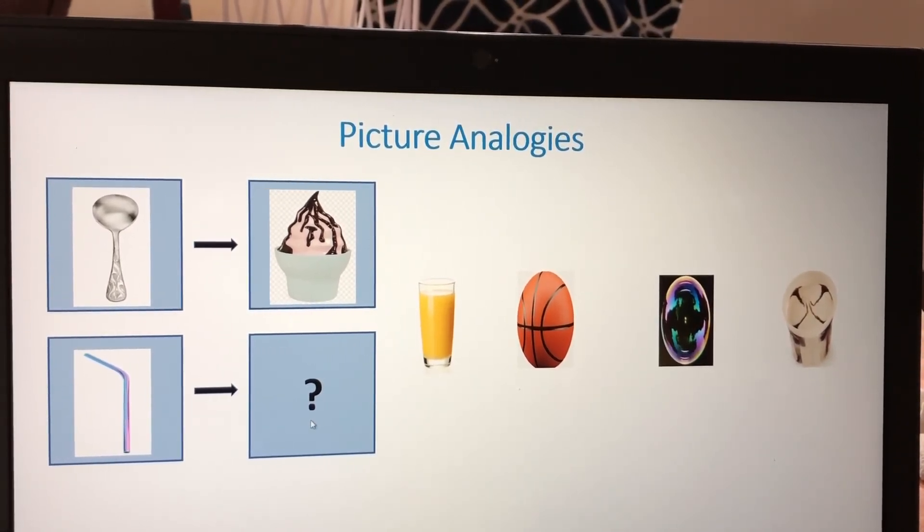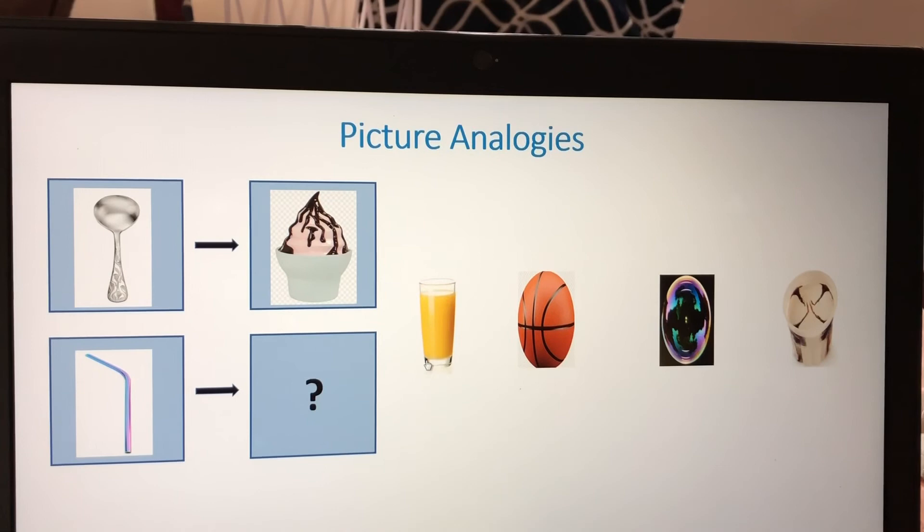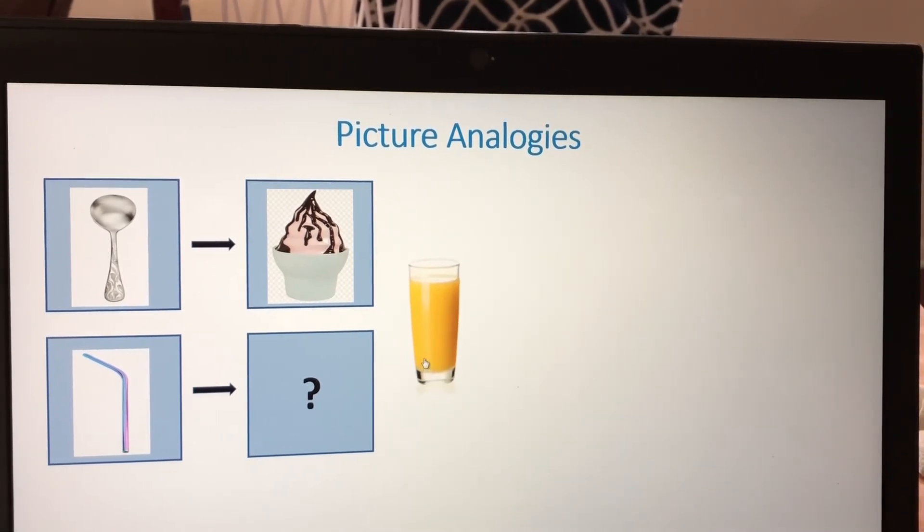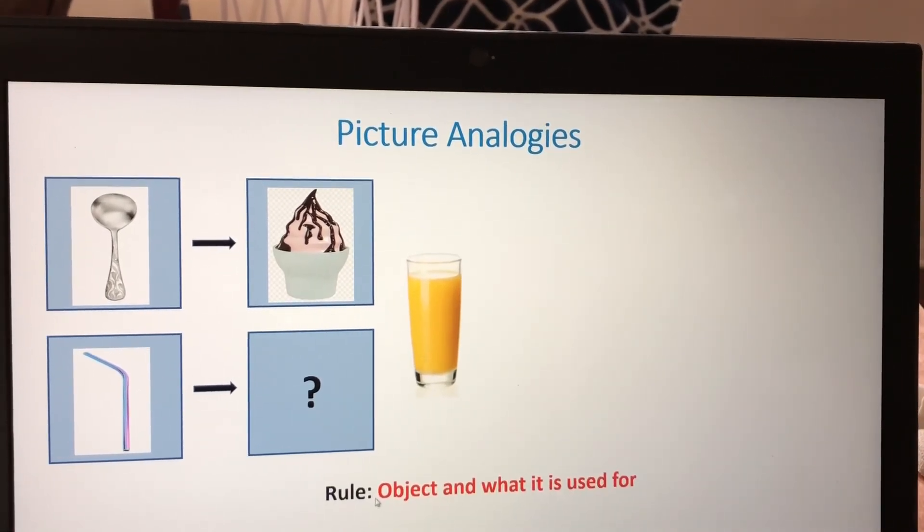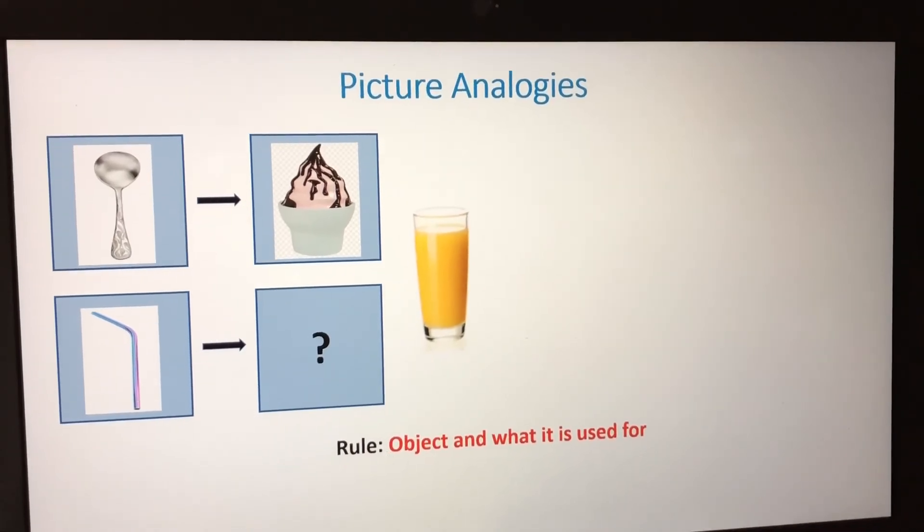What do we use a straw for? We use a straw for drinking. So juice is the answer because the rule is object and what it is used for.